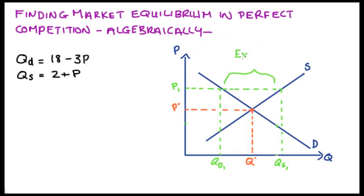At P1, the quantity supplied is much bigger than the quantity demanded, and we call this situation excess supply. What's going to happen when we have excess supply is that there's going to be downward pressure on the price. There's going to be lots of stock left on the shelves because it was just too expensive and people didn't want to buy the product. So suppliers are going to lower the price, and as they lower the price, more people who otherwise wouldn't have bought the product are going to come into the market. This downward pressure continues until there is no more excess supply left, and we're at equilibrium point P star and Q star.